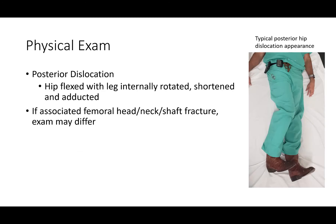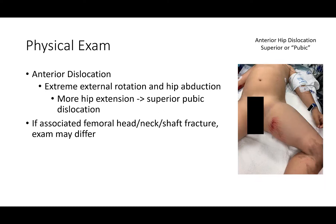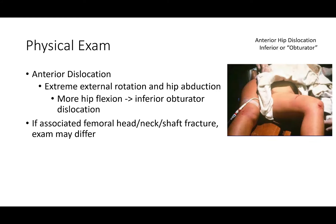On physical exam, the hip may be flexed. In a posterior dislocation, the leg is going to appear internally rotated, shortened, and adducted in a pure dislocation. If there's a femoral head, neck, or shaft fracture, the exam may differ and may not be quite as dramatic. In an anterior dislocation, there's going to be extreme external rotation and hip abduction, though it might differ if it's not a pure dislocation.